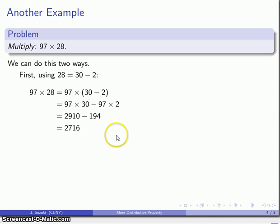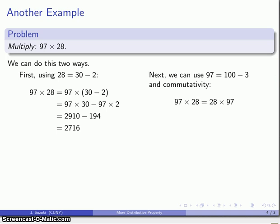Again, one possibility: subtract 200, return 6. On the other hand, we might use the fact that 97 is pretty close to 100. So I'll use 97 as 100 minus 3 and I'll apply commutativity. So 97 times 28 is the same as 28 times 97, and that's 28 times 100 minus 3.